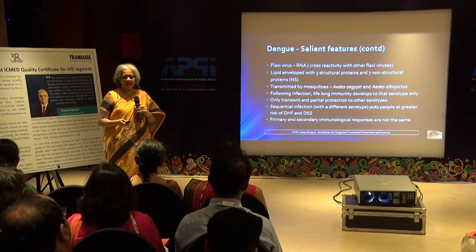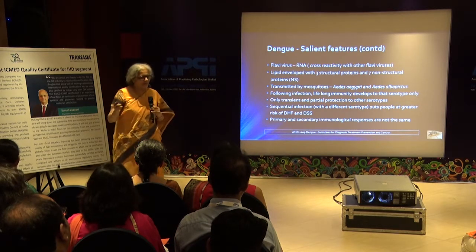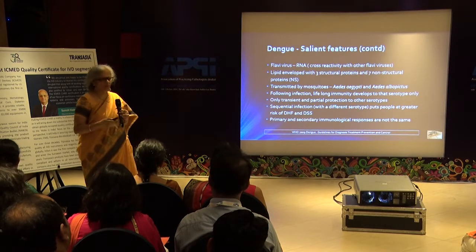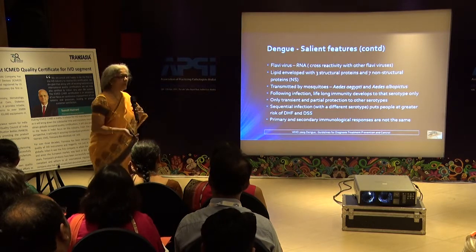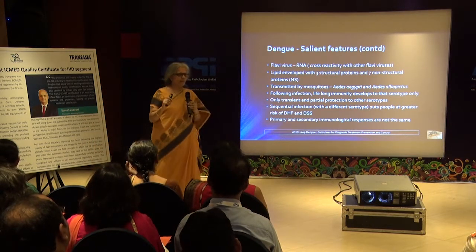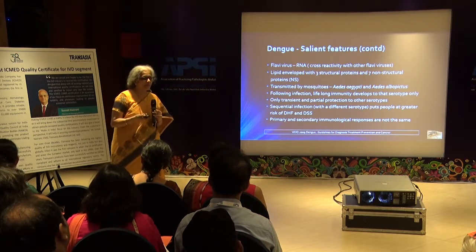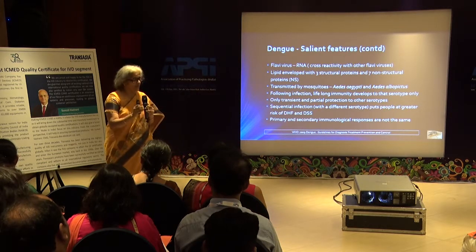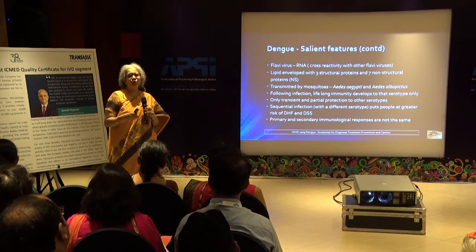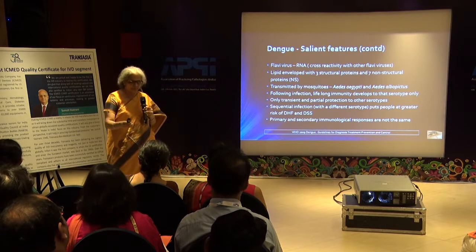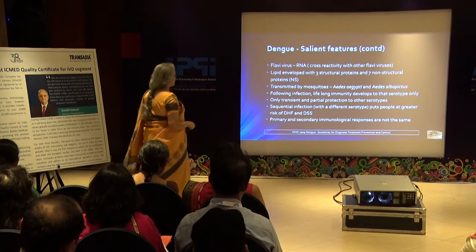Dengue is a lipid-enveloped virus carrying structural and non-structural proteins. The non-structural protein you use in your labs is NS1. There are about seven non-structural proteins, but NS1 is the one we use because it is more conserved than the others found in flaviviruses. You could say that if NS1 is positive with dengue-specific monoclonal antibodies, it is more likely to be dengue and not any other flavivirus infection.